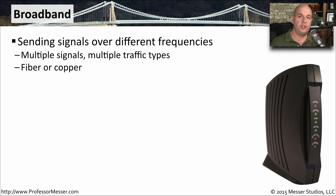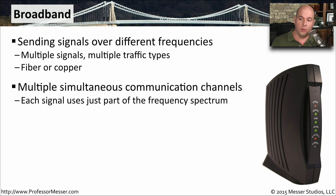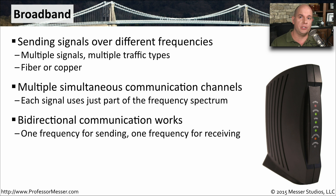On a broadband network, we're not just sending a single signal over this link. We are sending many different signals over this connection, all running at different frequencies. That means we can have different traffic types or different communication channels all occurring across the same medium at the same time. The type of medium doesn't matter — this can be a copper or fiber connection. The key with broadband is that each individual communication channel is just using part of the frequency available on that particular medium, so many different communications can go over this link simultaneously.